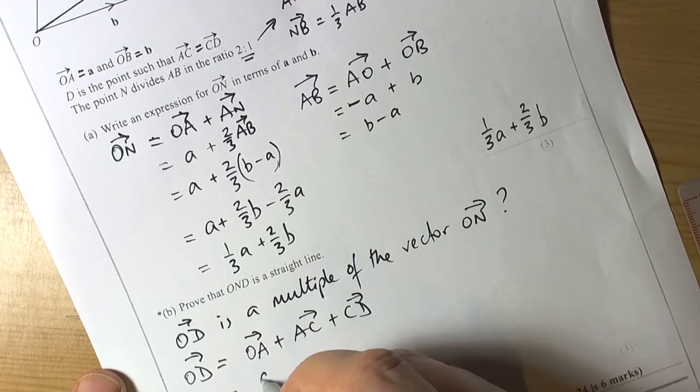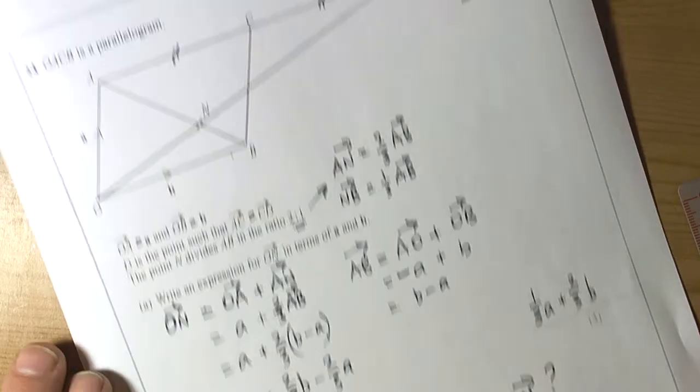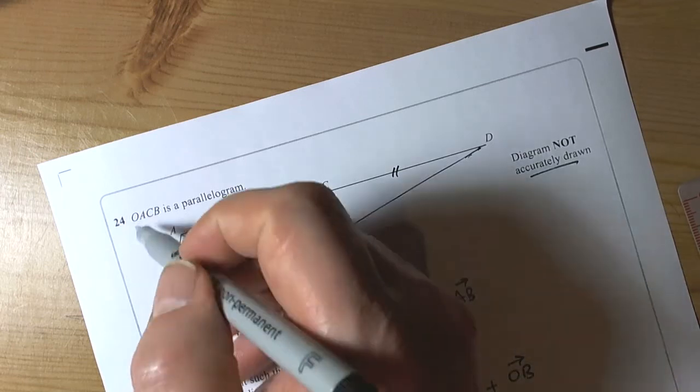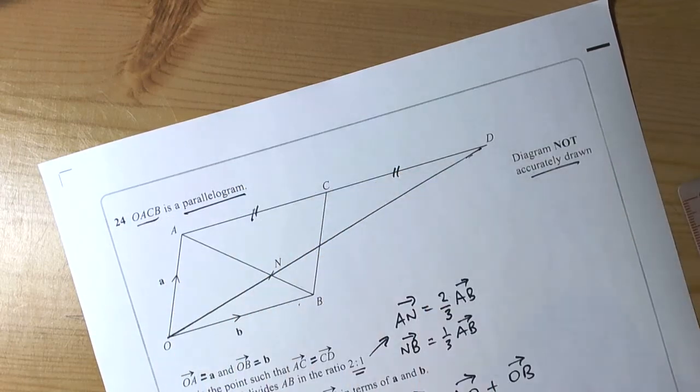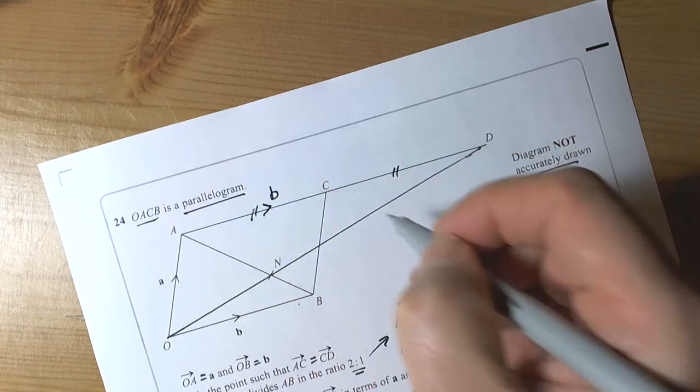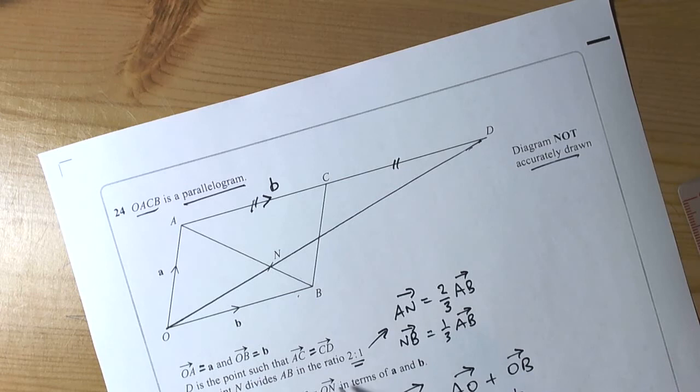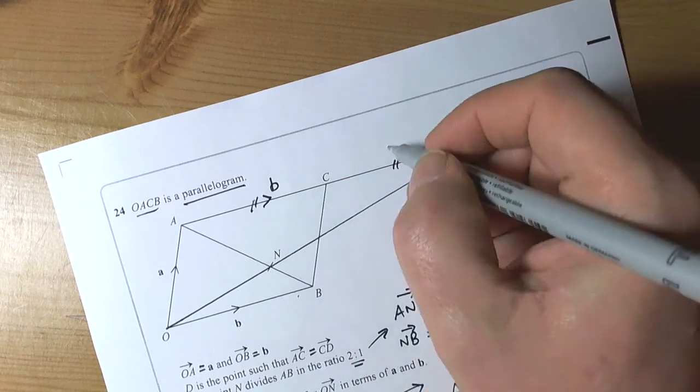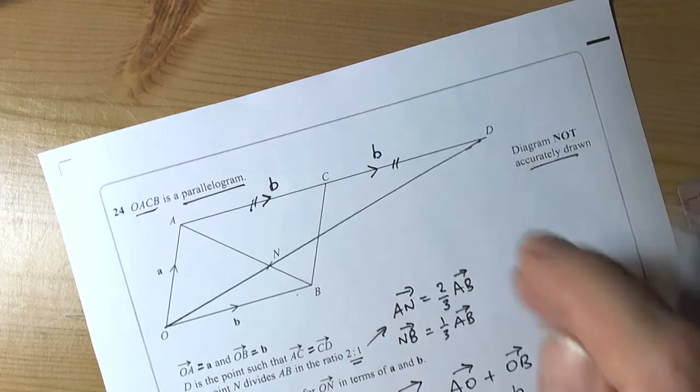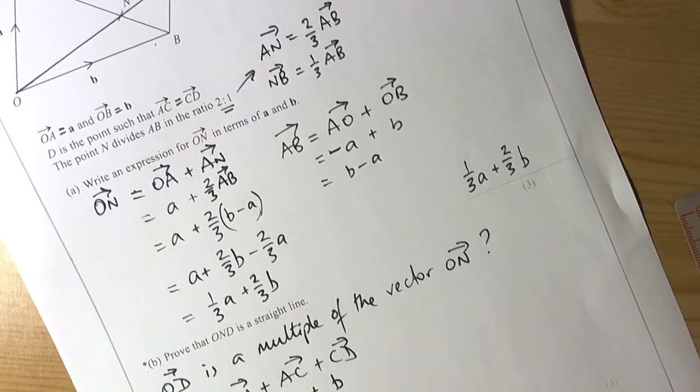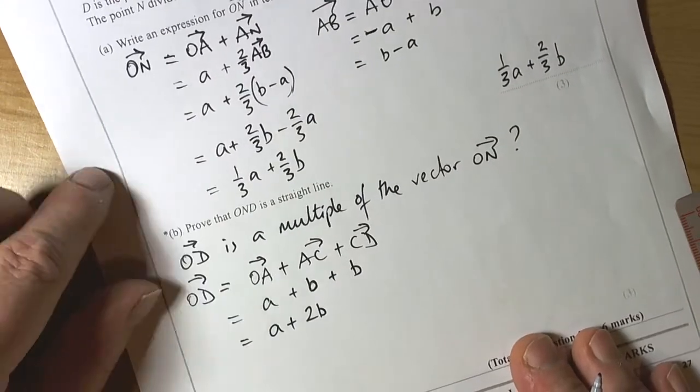Well, OA is a. In a parallelogram, we know automatically that this must be vector b, parallel to that side. And because they told us that AC is equal to CD, then we also know that this is vector b. So we've got plus b here, plus b here, plus another b. So I've shown that down is a plus 2b. So that's the vector OD.